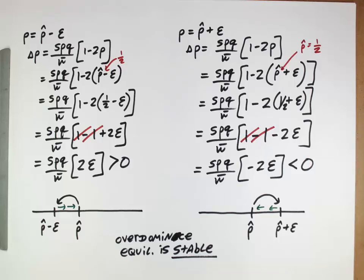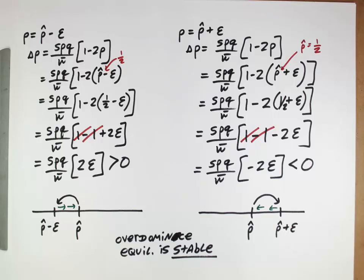For example, similar sorts of growth equations and change equations are used in wildlife management and conservation biology. When an individual is trying to manage a population and they have these equations, if a population reaches an equilibrium, they may be interested in whether this equilibrium is stable or unstable. If the equilibrium is stable, that means some individuals could be removed from that population — maybe by allowing hunting permits — and the population would return back to that equilibrium.